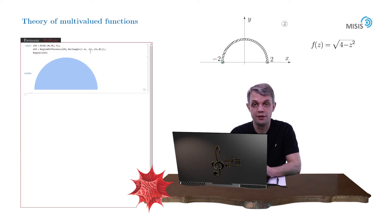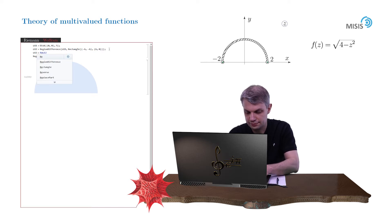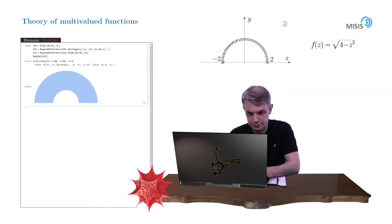And also we need to subtract the region cut by the branch cut. So we introduce a new region omega 13, which is our half of the disk. And this time we again make region difference. And we subtract the disk of radius 2. Yeah, here is our region.